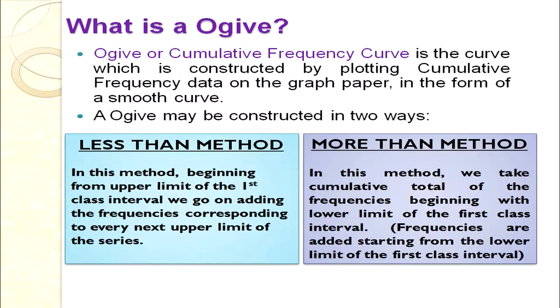This is how we draw a frequency polygon with the help of a histogram. Now let's discuss cumulative graphs. Cumulative frequency curves are often known as ogives. An ogive is a curve constructed by plotting cumulative frequency data on graph paper in the form of a smooth curve. Note: unlike the frequency polygon where we used a ruler, in ogives we join the points freehand as a smooth curve.